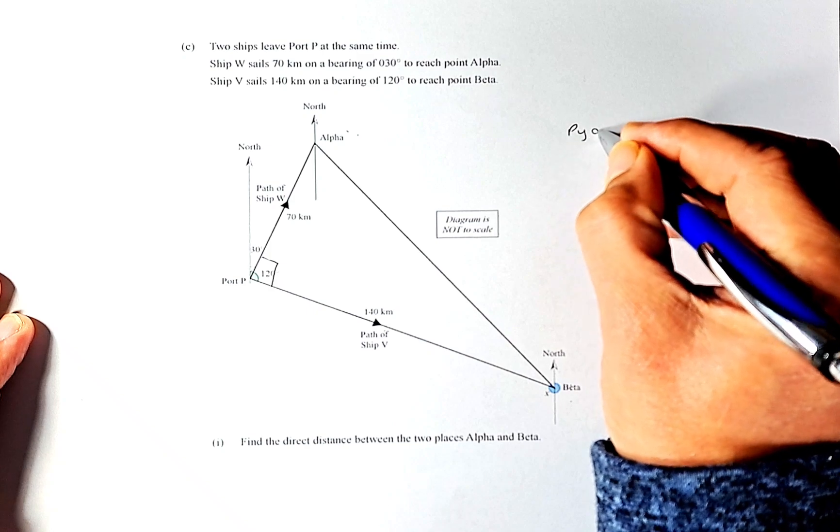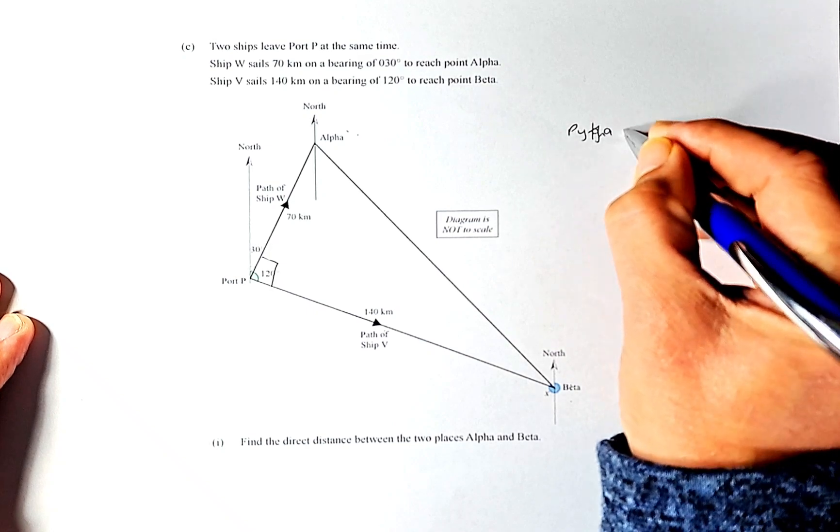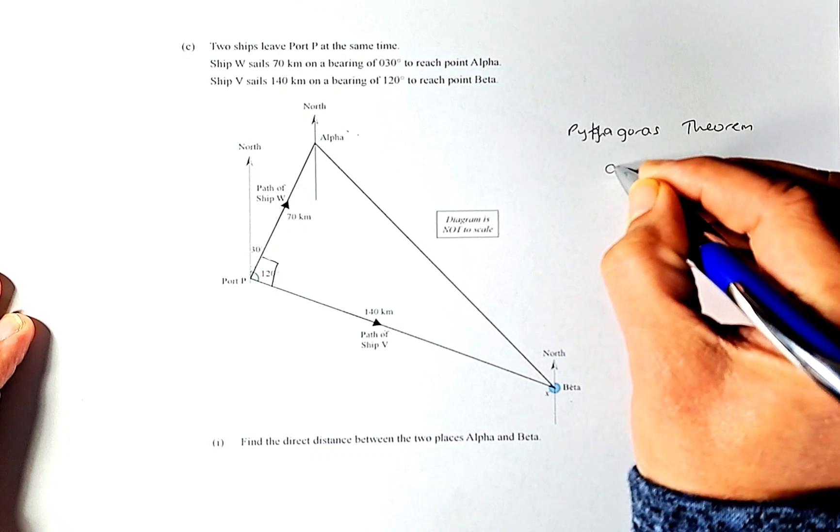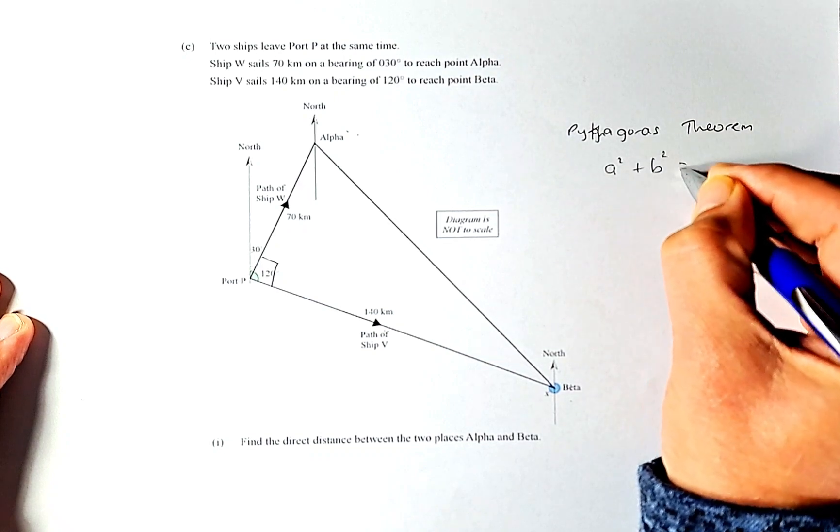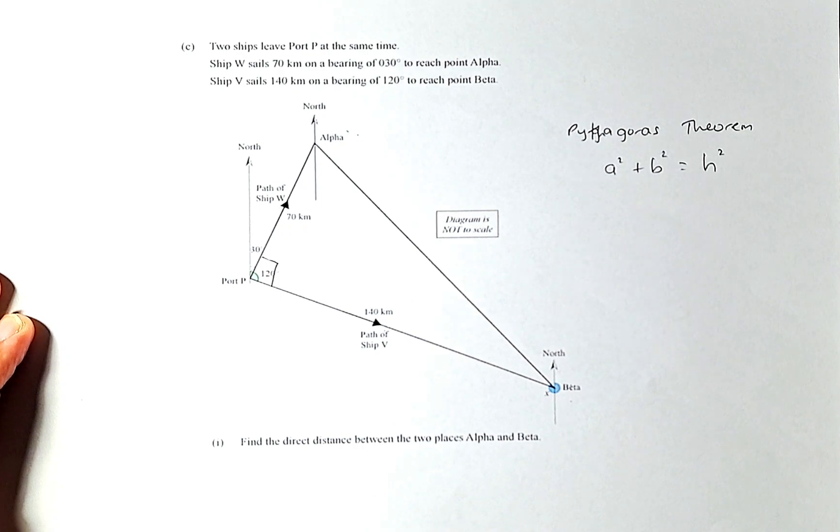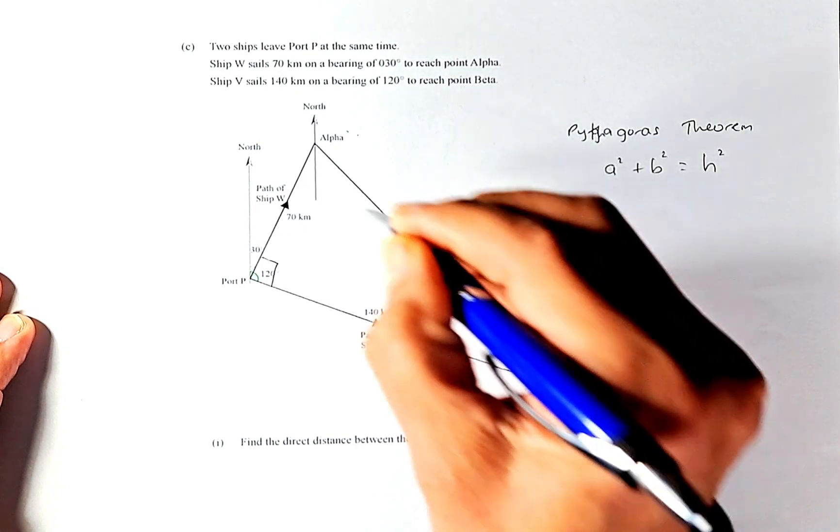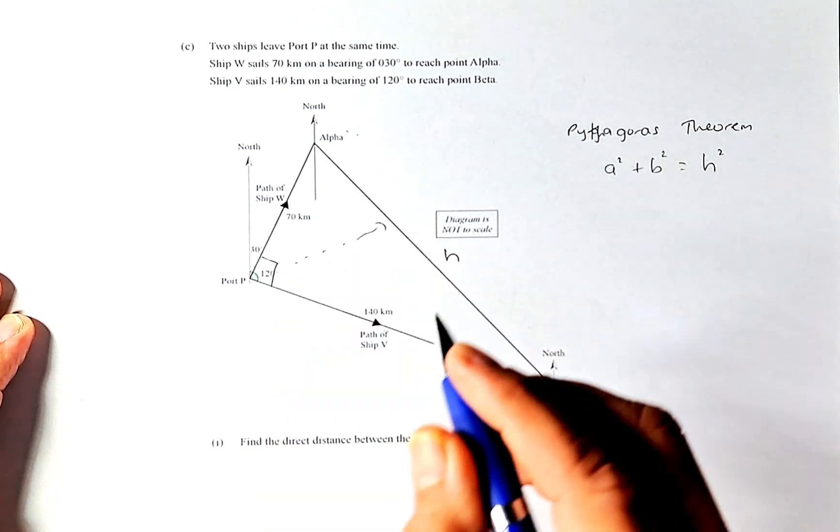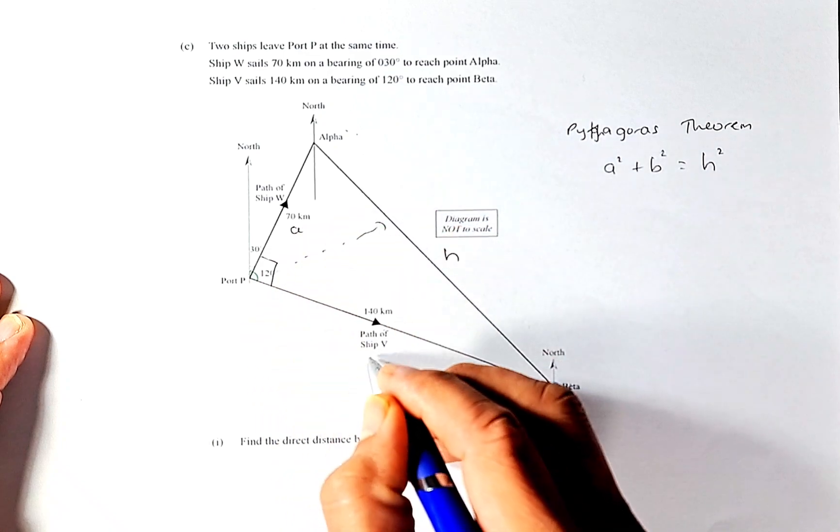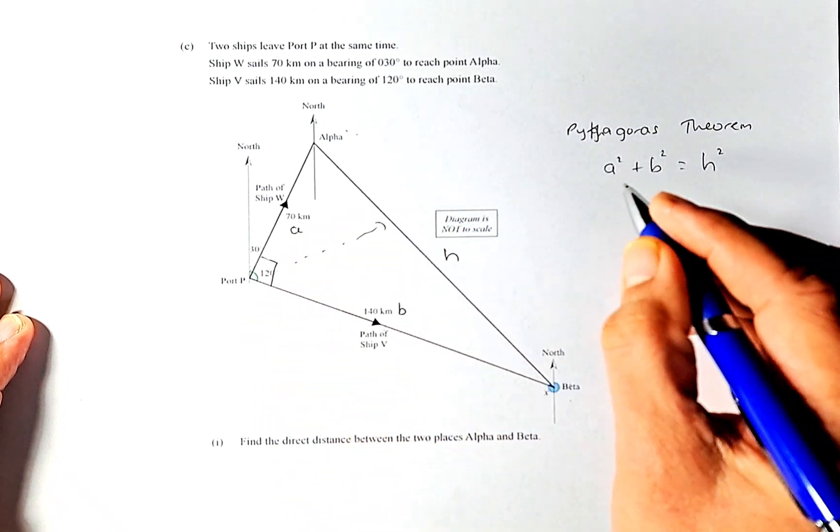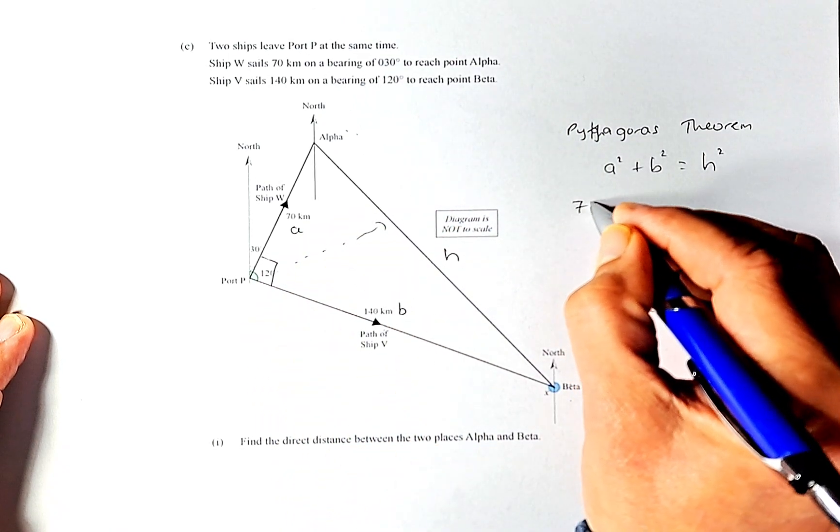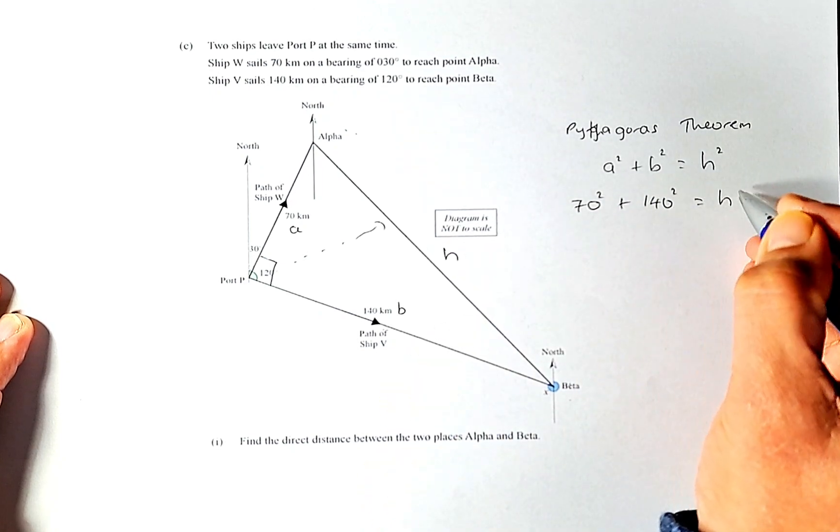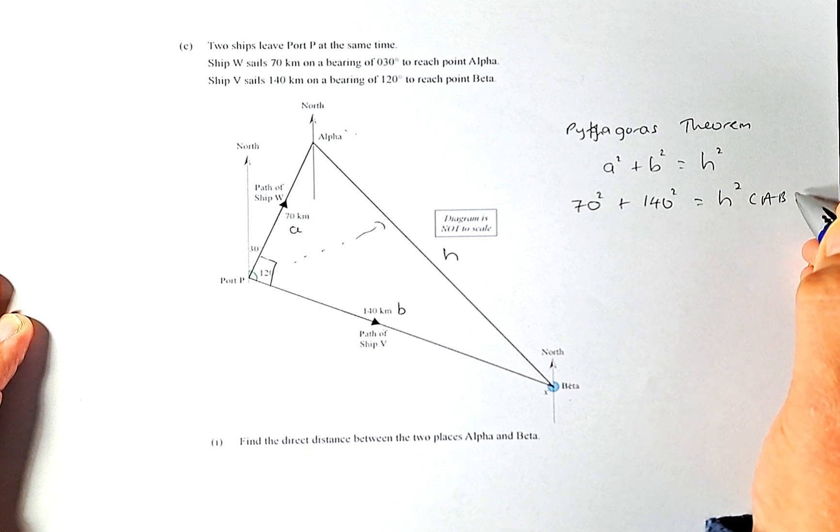So Pythagoras theorem has this formula: a squared plus b squared equals h squared, where h is the hypotenuse. In our case we're going to put the h here because it's the longer side opposite the 90 degrees. We label them so a squared is going to be 70 squared plus b squared is 140 squared and that will equal h squared or the length AB squared.